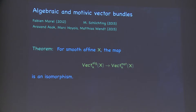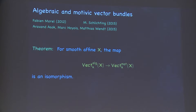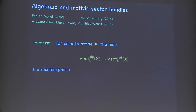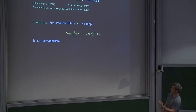There's a theorem of Morel, published in 2012 — though it goes back quite a bit before — and later Marco Schlichting and then Arvind Asak, Marc Hoyois, and Matthias Wendt found a much simpler and more direct proof. The theorem says that for smooth affine varieties, algebraic and motivic vector bundles are the same thing. You can think of that as a really definitive version of Lindel's theorem, or even the Quillen-Suslin theorem. Lindel's theorem says algebraic vector bundles are A¹ invariant, and this is a more definitive statement.